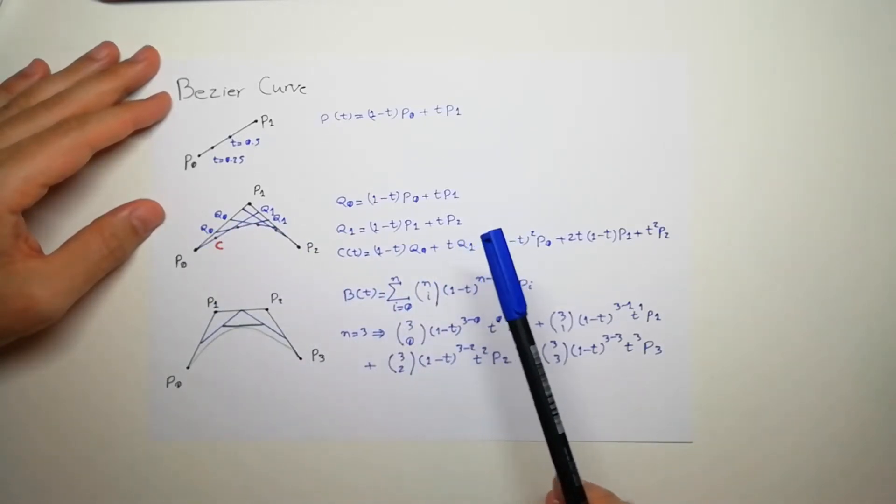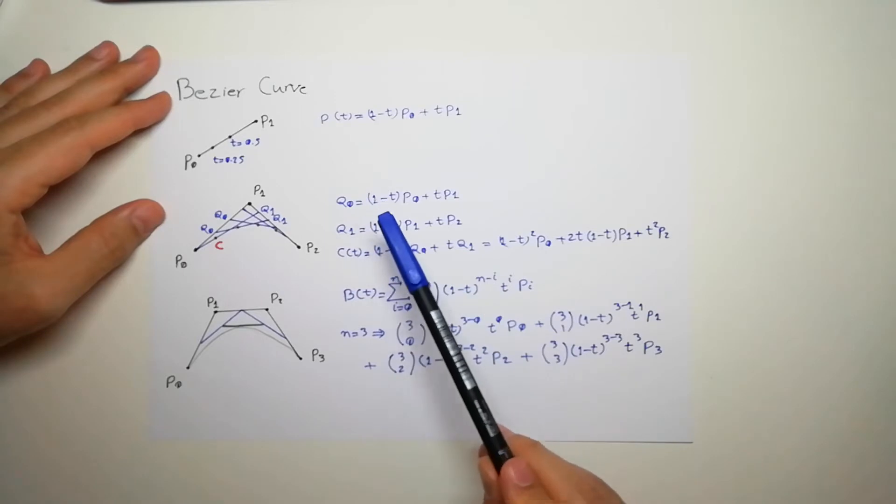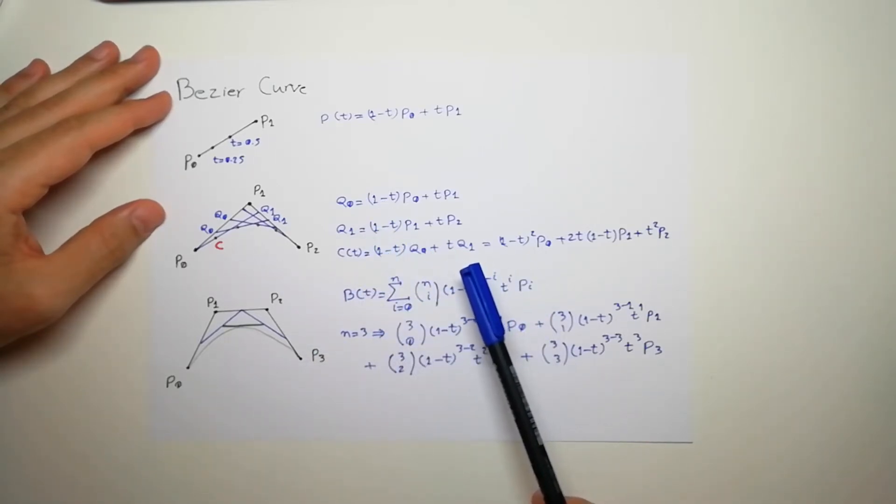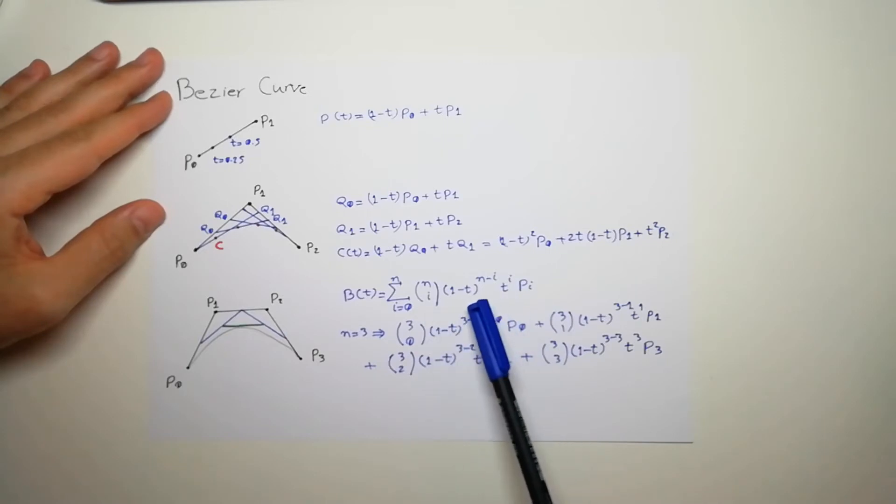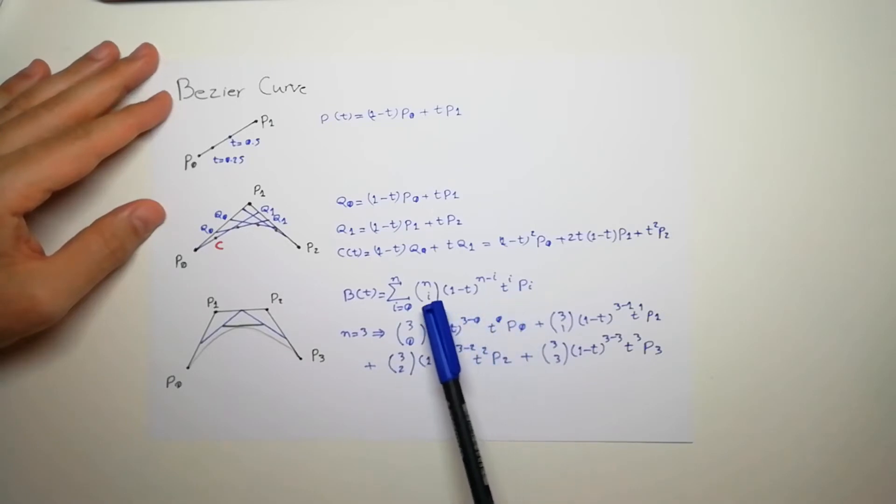As you can see, we can see a pattern here. It's a binomial pattern. If you studied probability, you have seen in the binomial probability that probability of something multiplied by its complement. So if you remember the equation there, it was one minus t.